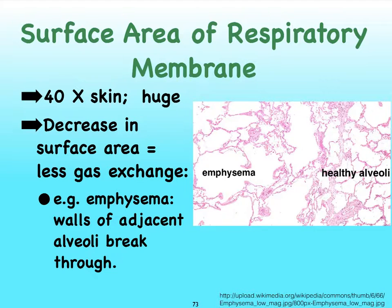But aside from thickening, we can also see issues with the respiratory membrane losing surface area. In a healthy individual, the surface area of a respiratory membrane is gigantic — it's 40 times the size of our skin, and our skin is already huge. Any kind of decrease in the surface area is going to reduce the amount of gas exchange space, and we see this happening in people who suffer from emphysema, for instance.